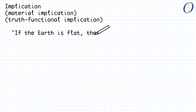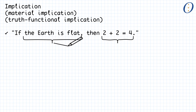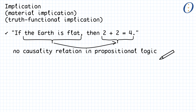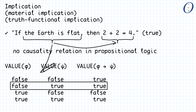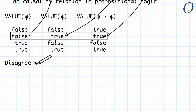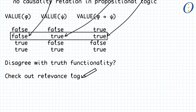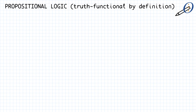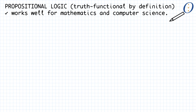As an immediate consequence, material implication allows for seemingly nonsensical propositions such as 'if the earth is flat, then 2 plus 2 is 4.' Such propositions are syntactically allowed in propositional logic and their truth values are well-defined, even if there is absolutely no causality relation between the earth being flat or not and 2 plus 2 being 4. Knowing that implication is weaker in propositional logic than in English, it is somewhat easier to accept that this statement is true. If you disagree with truth-functionality, know that you are not alone — there are logicians studying non-truth-functional logics, such as relevance logic. But by definition, propositional logic is truth-functional, and it turns out that truth-functionality is the right choice for doing math and computer science.